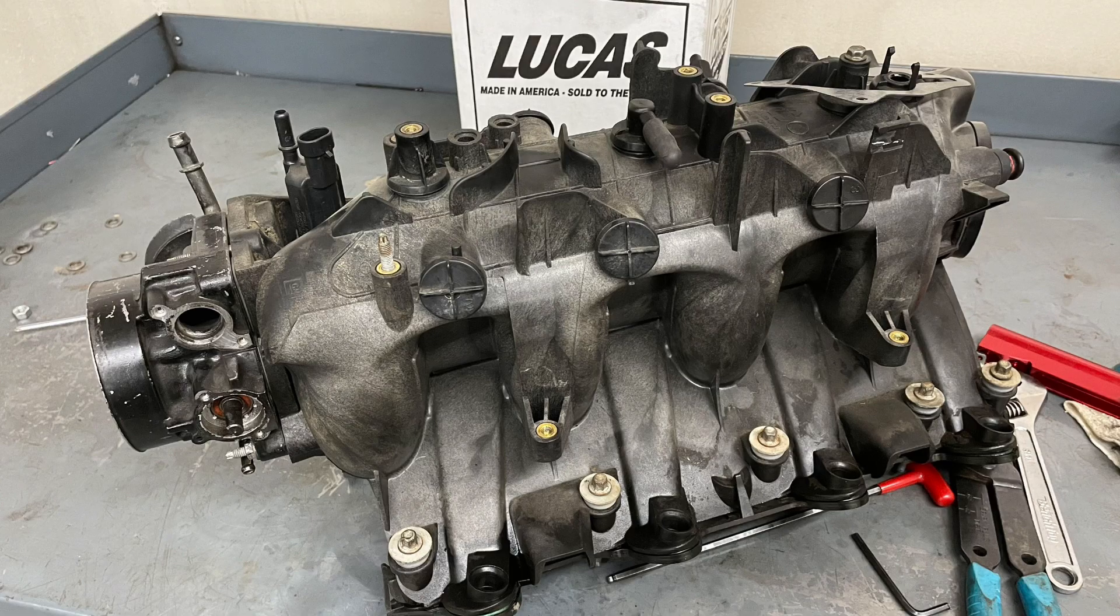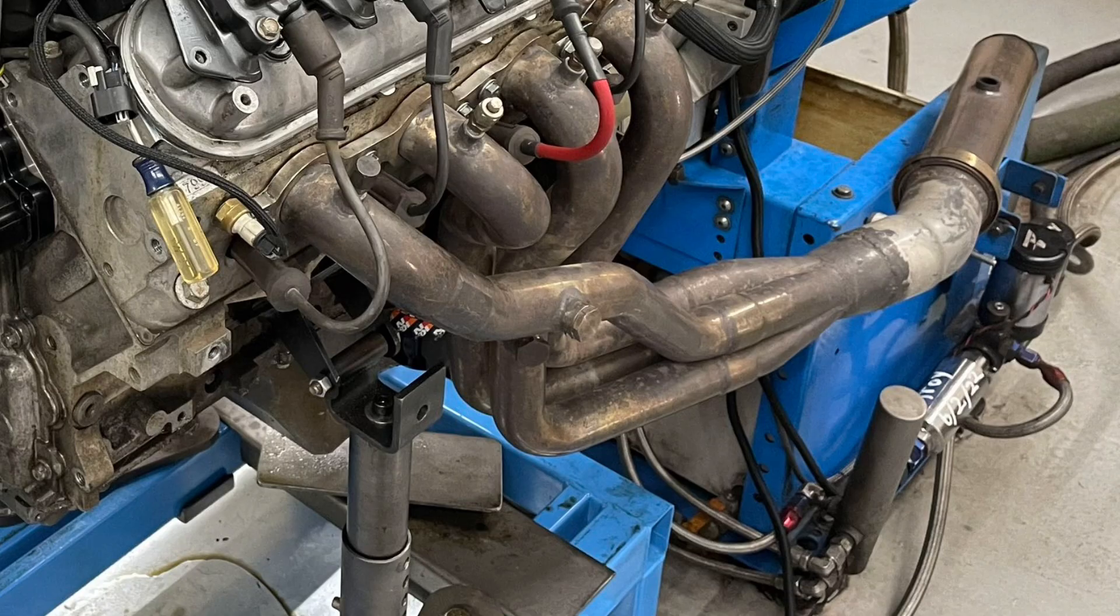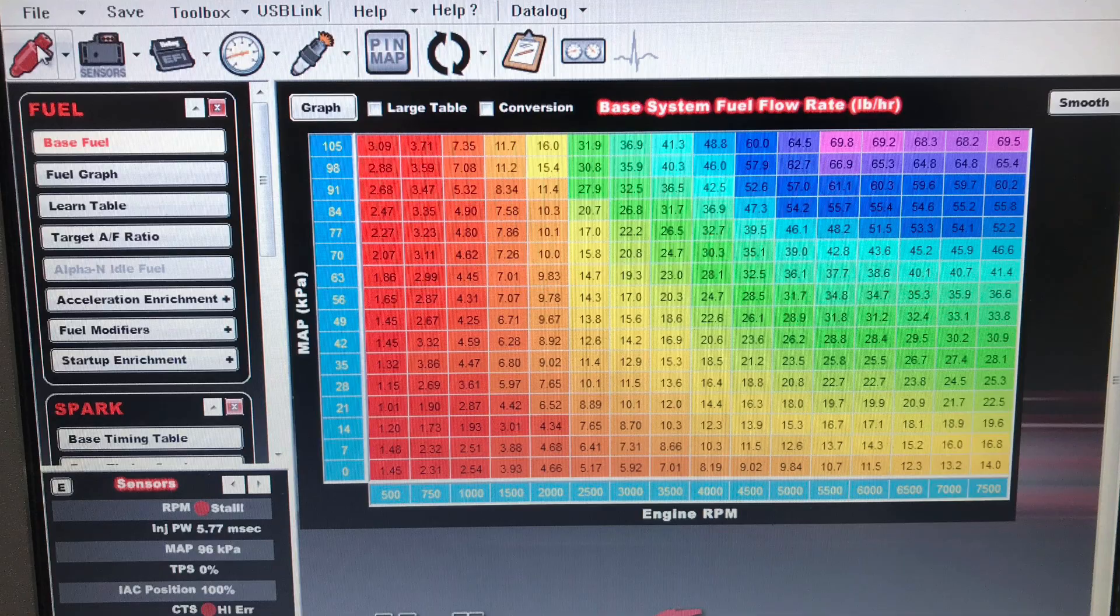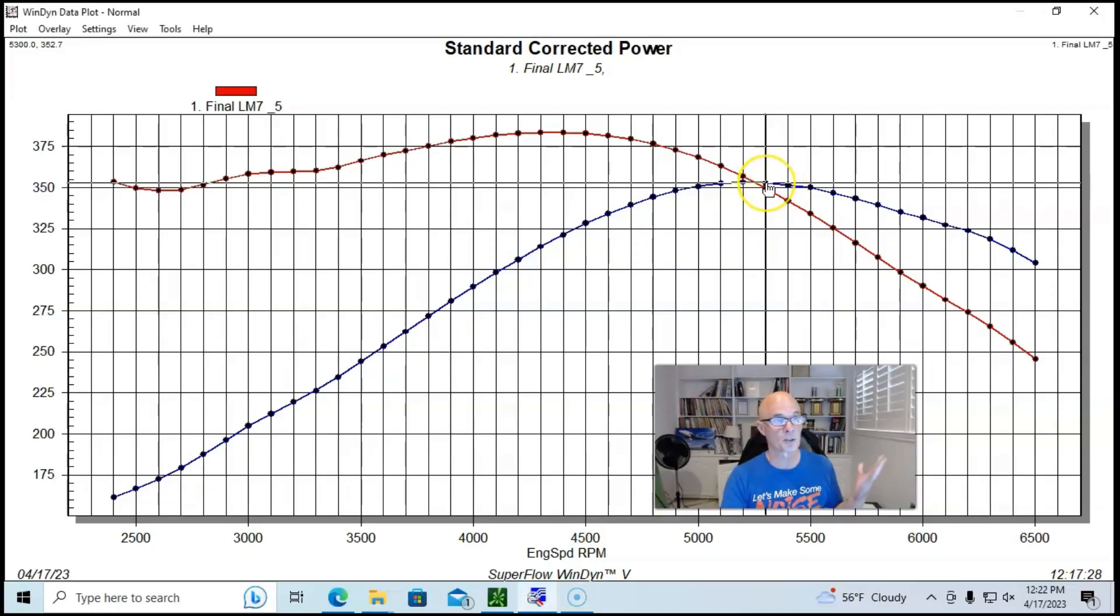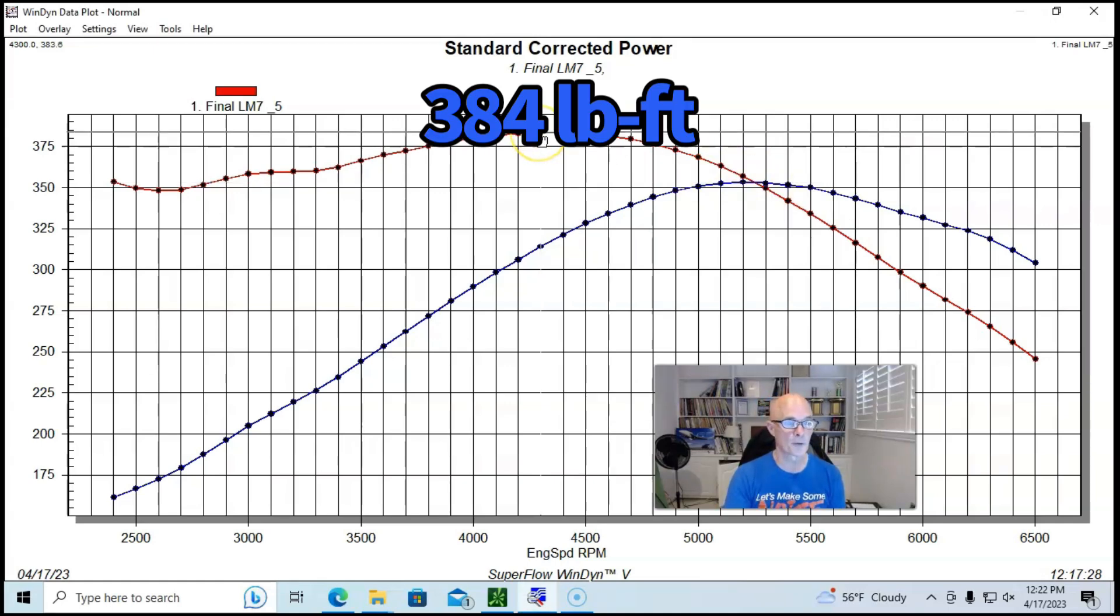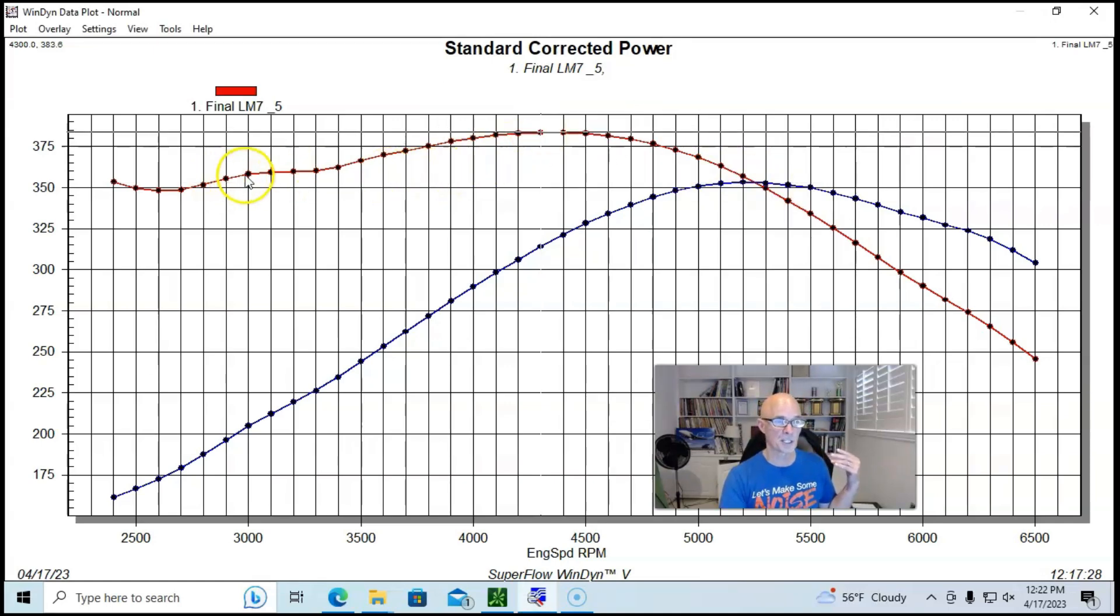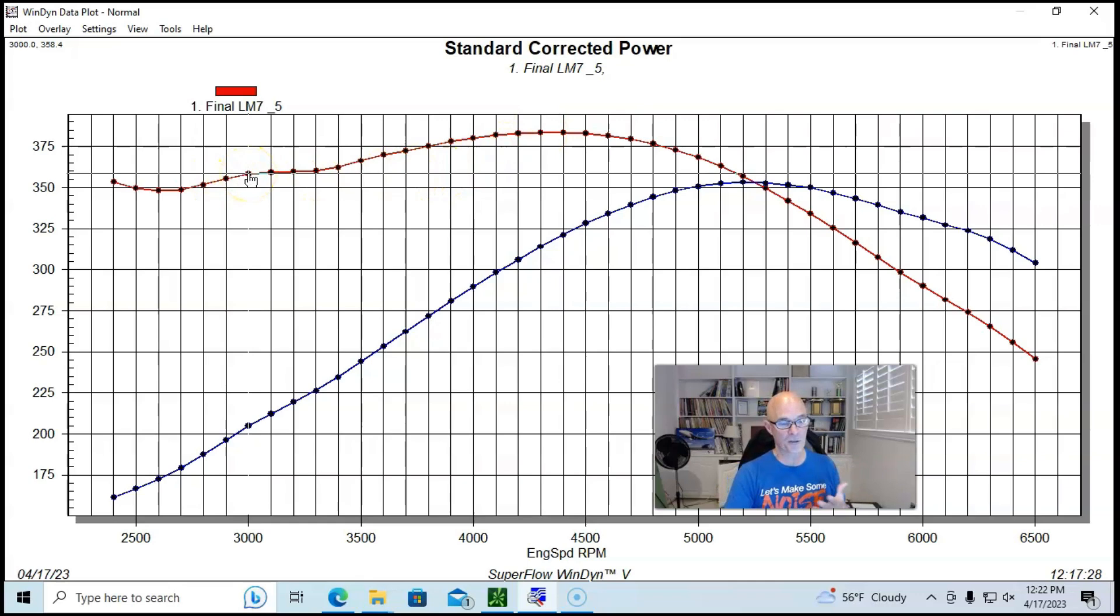Let's jump right in with our stock 5.3. This is your typical one from a wrecking yard. We had the stock truck intake manifold and throttle body. It did have long tube headers. We ran it with the stock cam - this thing produced 353 horsepower and 384 foot-pounds of torque. At 3,000 RPM, this thing produced 358 foot-pounds of torque.